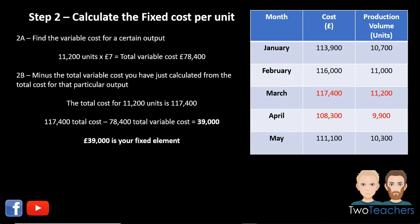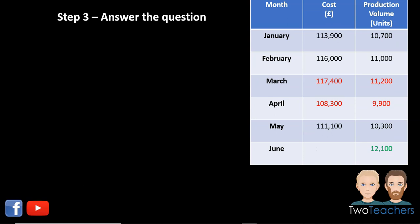Please pause the screen and review step two before moving on. The third and final step is to answer the actual question: calculate the cost expected in June if output is expected to be 12,100 units. There is now an additional row in the table showing 12,100 units in June, and we need to find the cost of those units using the high-low method.